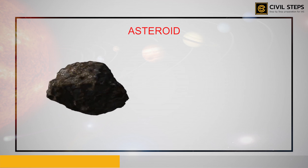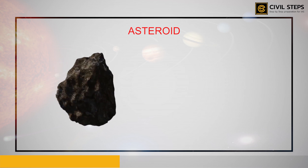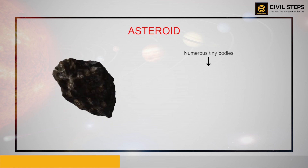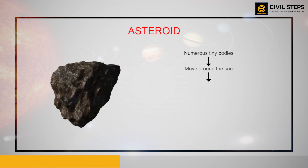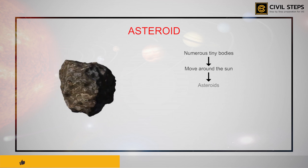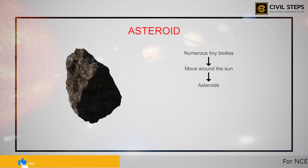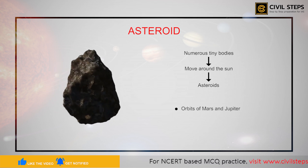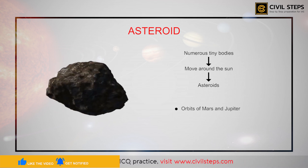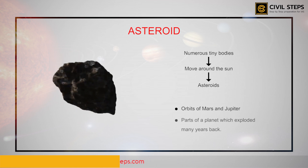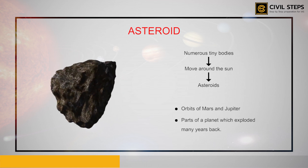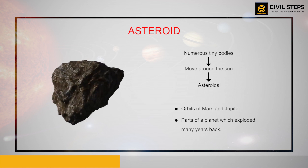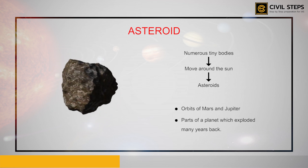Apart from stars, planets, and satellites, there are numerous tiny bodies which also move around the Sun. These bodies are called asteroids. They are found between the orbits of Mars and Jupiter. Scientists are of the view that the asteroids are part of a planet which exploded many years back.